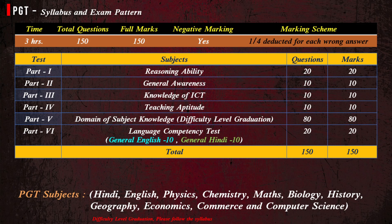PGT main subjects are Hindi, English, Physics, Chemistry, Maths, Biology, History, Geography, Economics, Commerce, and Computer Science. The difficulty level of questions is up to graduation.